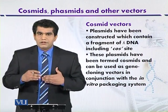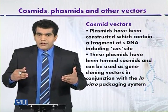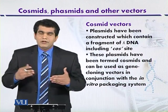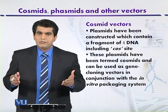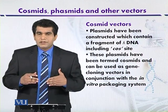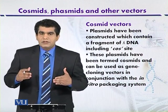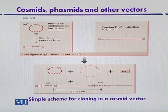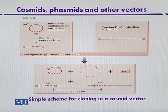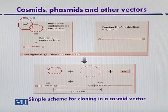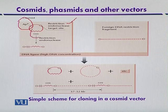Looking at the genetic map of the cosmid vector, as already discussed, it contains the cos site from the lambda genome. It also contains selectable markers in the form of antibiotic resistance, and a restriction site for a particular restriction enzyme so that we can insert larger DNA fragments of foreign origin. The genetic map shows a selectable marker which is a gene for ampicillin resistance, a restriction site for an appropriate restriction enzyme to insert foreign DNA, and the cos site from the lambda genome.